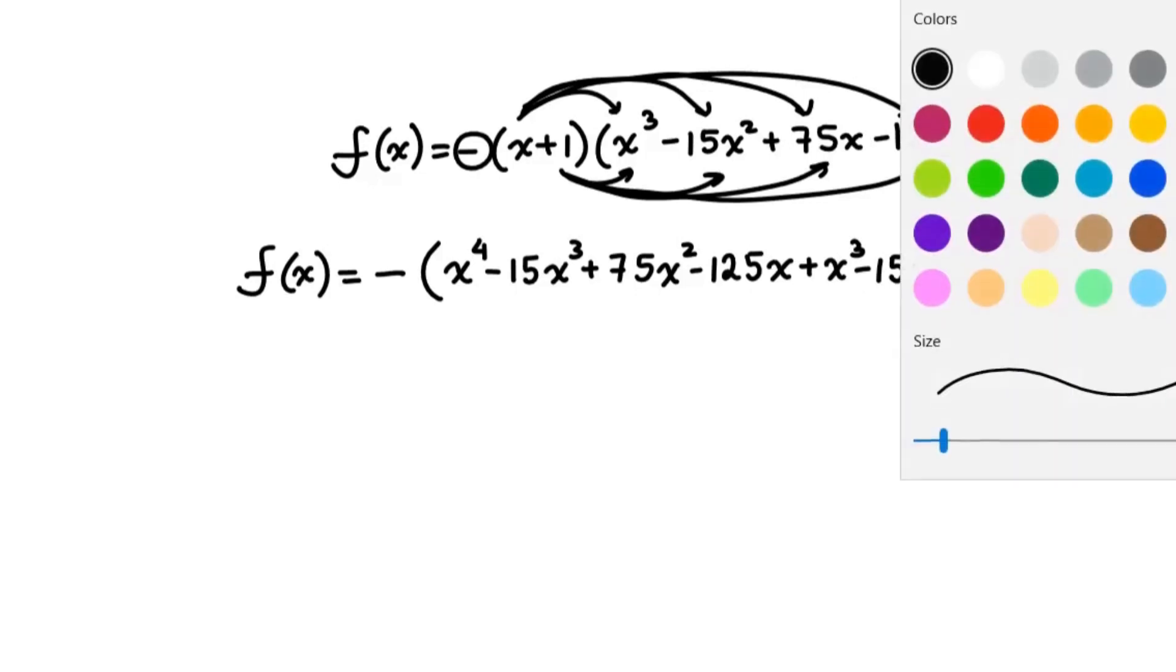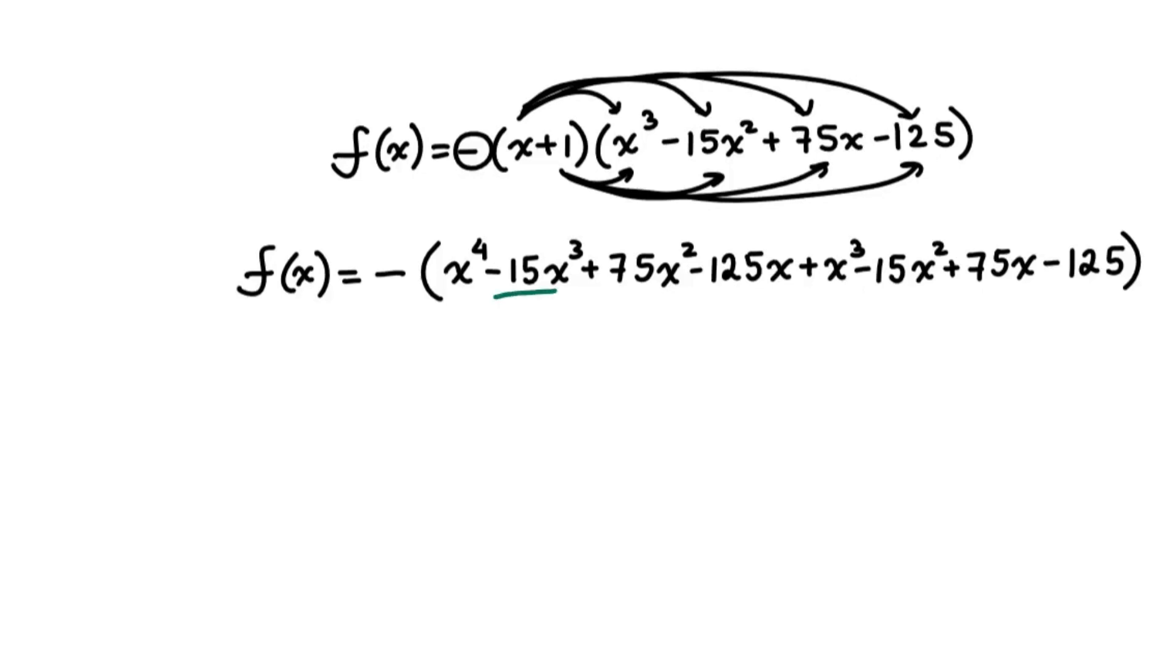Next, we're going to try and collect combined like terms. So we have negative 15x cubed and positive x cubed. We have positive 75x squared and negative 15x squared. And we have negative 125x and positive 75x. So then f of x is equal to negative x to the power of 4 minus 14x cubed plus 60x squared minus 50x and then subtract 125.